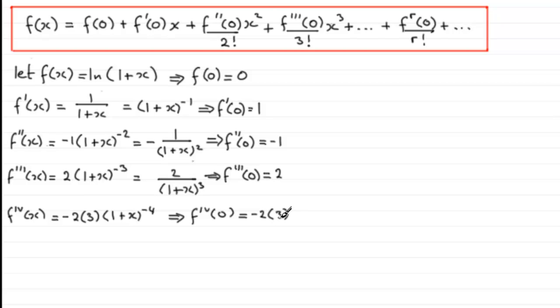Now, if I was to do f^(5)(x), for instance, the fifth differential, can you see that I'm going to get -2 times 3 times -4? In other words, it'll be just 2 times 3 times 4 times (1+x)^(-5).